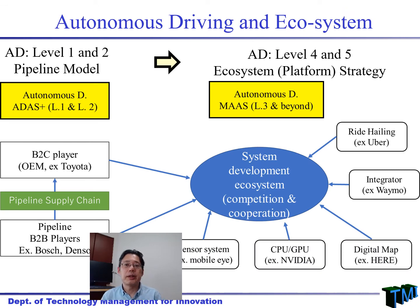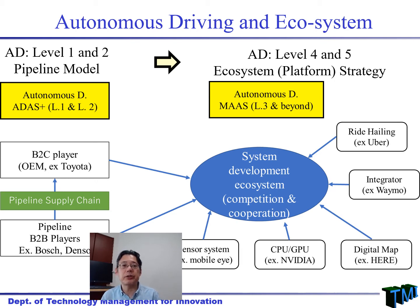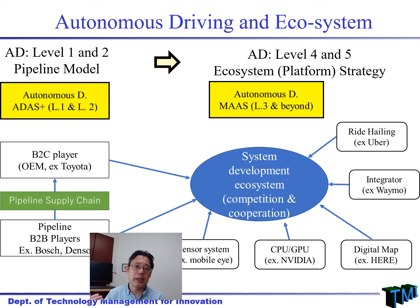This one is the change of industrial structure and industrial organization of the automotive industry, which is a very important industry for Japan. In terms of autonomous driving, at lower levels — level one, two — there is still the so-called pipeline system, or traditional supply chain managed by OEM, such as Toyota Motors. But when you move up to higher levels of autonomous driving, a major change is becoming visible.